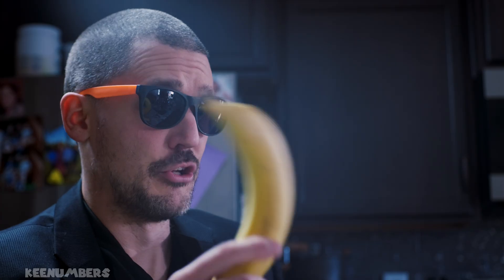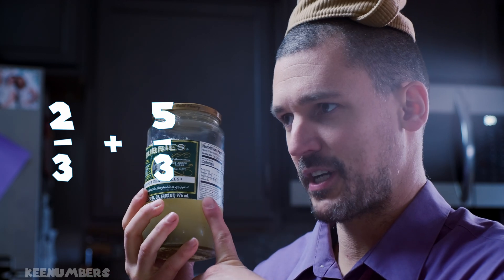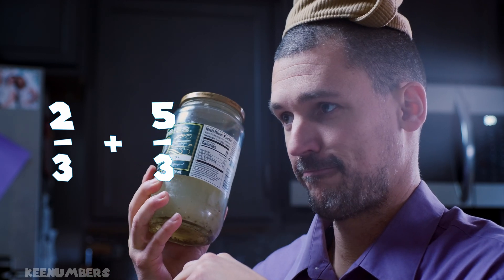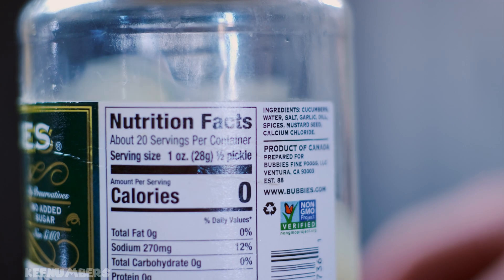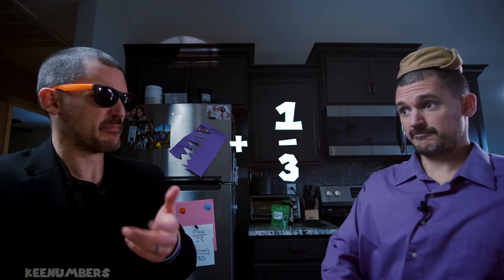I've got it. A new banana pudding recipe. No. 2⅓ of a cup plus 5⅓ of a cup of pickle juice. You need to add about another third of a cup of pickle juice.